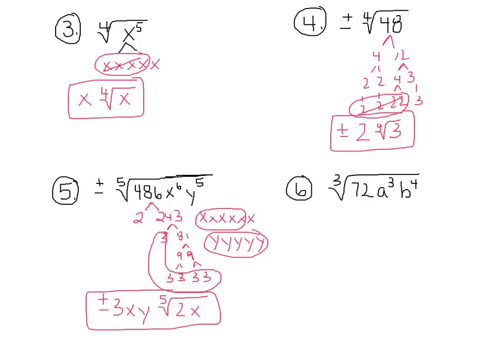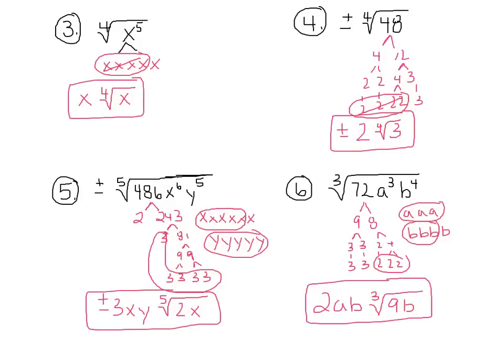Number 6. I want you to do this on your own. And then when you're ready to check your answer, play the video again. Check your answer. You should have gotten 2ab cube root 9b. So just remember, anytime you have something left over, so the 3 and the 3, you're going to multiply those back together.